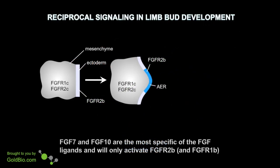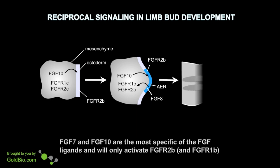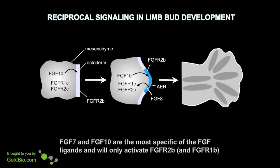Coming back to the example of the limb bud, we can see how this potential reciprocal signaling works. FGF10 is expressed in limb mesenchyme but only signals to the overlying ectoderm, where it activates FGF receptor 2B and leads to the formation of the apical ectodermal ridge. This then activates expression of FGF8 in the AER, and FGF8 signals back to the mesenchyme to FGF receptors 1C and 2C. FGF10 continues to signal to the AER, and this reciprocal signaling between FGF10 and FGF8 leads to outgrowth and proximal distal patterning of the limb bud.